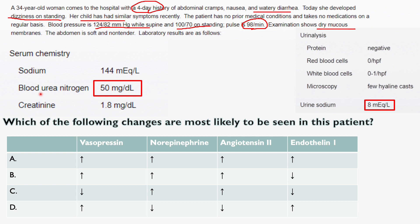Her labs show very alarming values: blood urea nitrogen is 50 — it shouldn't exceed 20 — so BUN is very high. Urine sodium is 8 mEq/L, which is low. Low urine sodium means sodium is being reabsorbed back into the blood. High BUN means urea is being reabsorbed heavily into the blood. So we have reabsorption of both urea and sodium — keep this in mind.